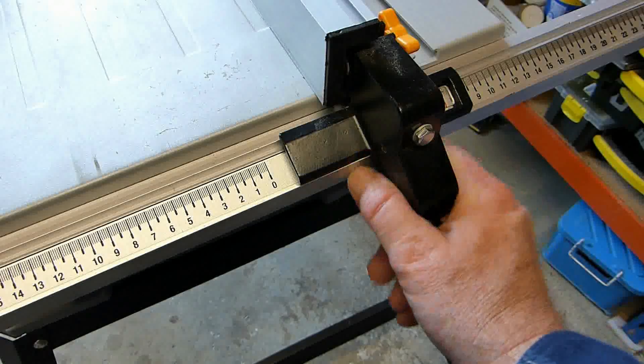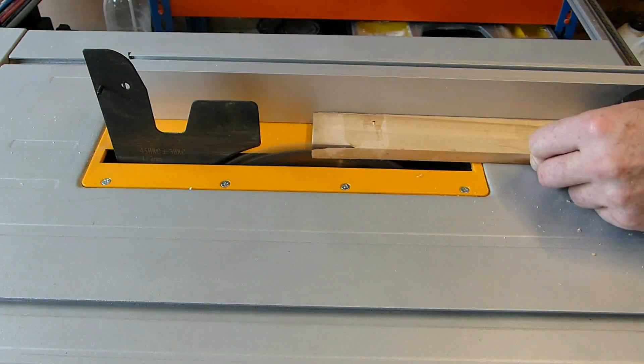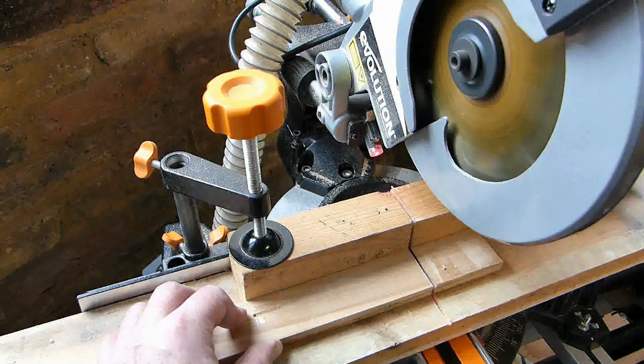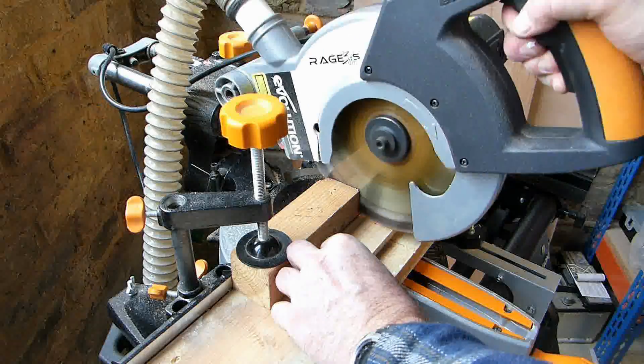The first task was to create the wooden housing. I set the table saw to 40mm and cut the wood to width. Then I squared the end of the wood on the mitre saw, measured 90mm and then cut the wood to length.